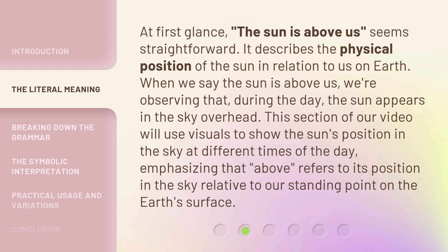At first glance, the sun is above us seems straightforward. It describes the physical position of the sun in relation to us on earth. When we say the sun is above us, we're observing that during the day the sun appears in the sky overhead. This section will use visuals to show the sun's position in the sky at different times of the day, emphasizing that above refers to its position in the sky relative to our standing point on the earth's surface.